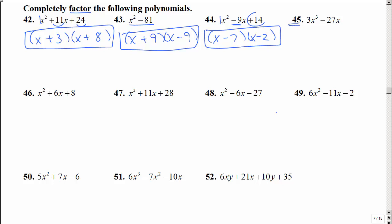Now number 45, whoa! That's not anything like the first 3. I've got to look for that GCF. What do they both have in common? They both have a 3x. So if I divide both by 3x, that's going to leave me x squared minus 9. But that's the difference of two squares. So I should know that x plus 3 times x minus 3, but don't forget that GCF.